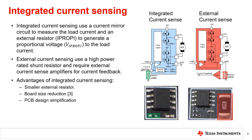Another advantage is PCB design simplification, as removing the shunt resistor can simplify the PCB trace routing. Lastly, internal current sensing allows for current monitoring during the decay phase since a current mirror is used to measure the current, whereas external sensing only uses a shunt resistor which does not allow for current sensing during the decay phase.